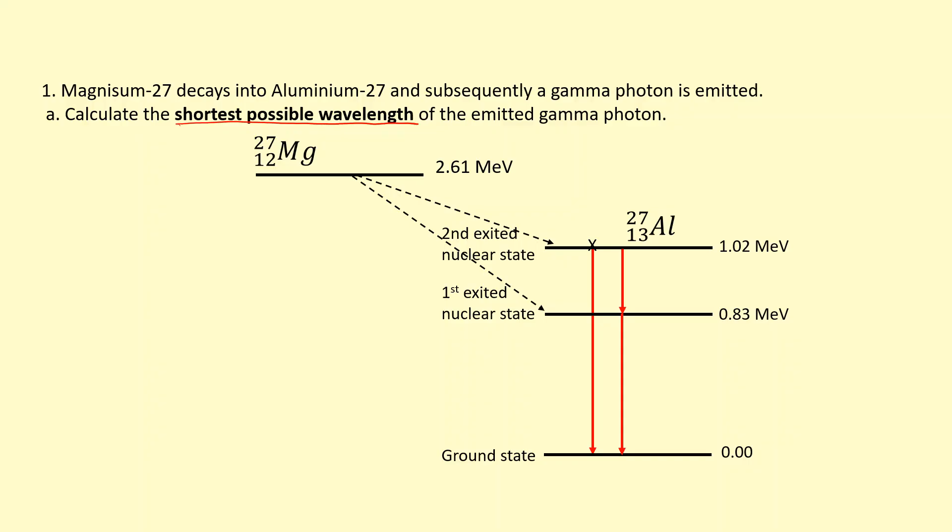So the shortest possible wavelength means the highest energy, so the highest frequency one, and that corresponds to the biggest energy gap, all the way from 1.02 to 0 mega electron volts. So we can use the energy of a photon, E = hf or hc/λ, we can use hc/λ.